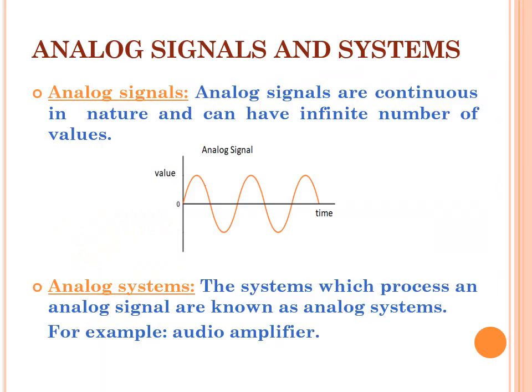Analog signals and systems are continuous in nature and an infinite number of values can be used. When we draw value in time, we will see a sine curve. Analog systems are those which can be used for analog signals. For example, an audio amplifier.